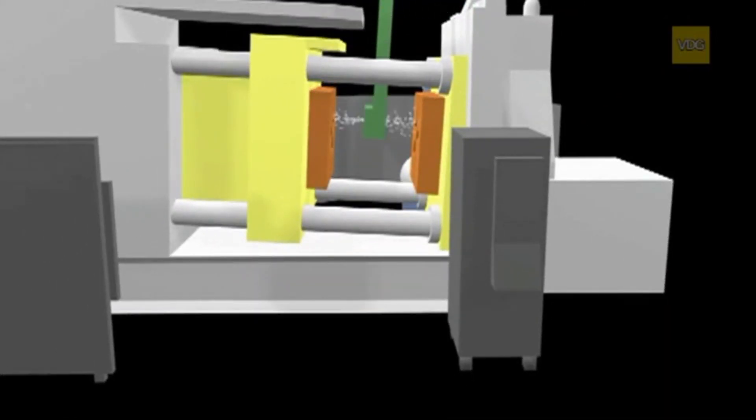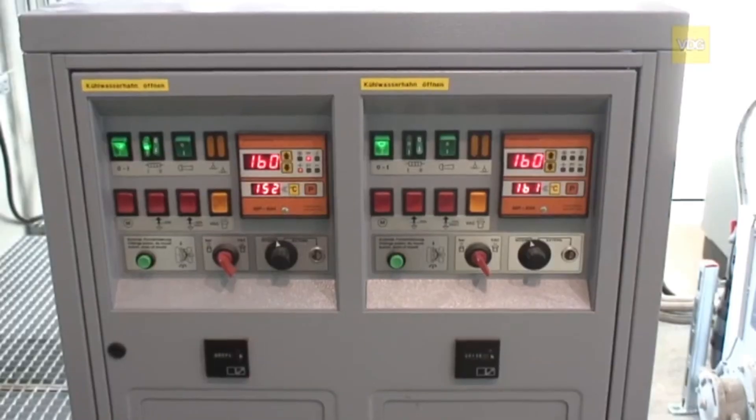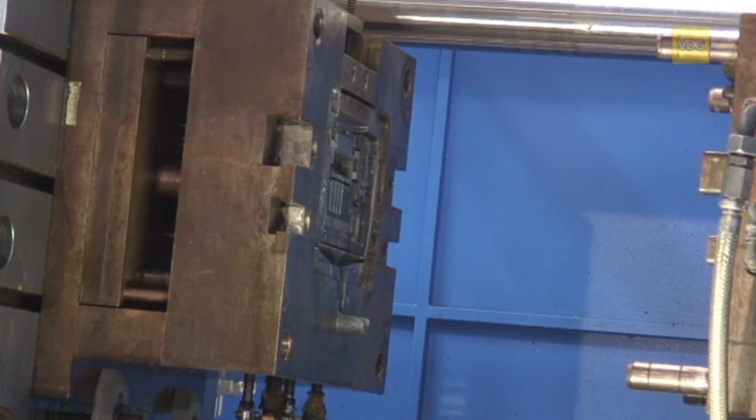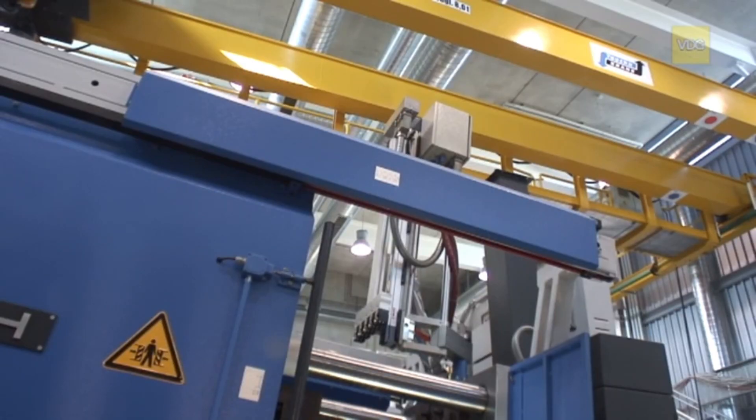Before each casting cycle, the mold must be recoated with a release agent. Hot-chamber high-pressure die-casting machines are slightly tilted to allow excess molten metal to flow back into the holding furnace. These machines are used for casting magnesium and zinc alloys.